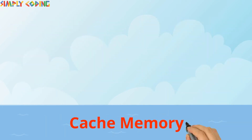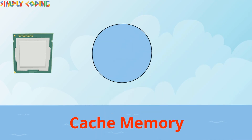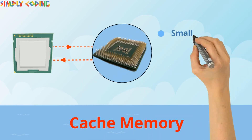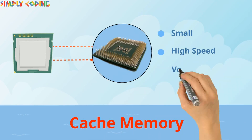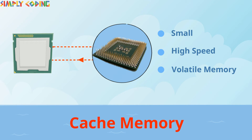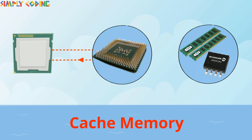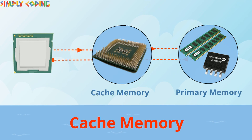Some computers also have something called cache memory, which is small, high-speed, volatile memory available to the processor for fast processing. The processor uses cache memory when a set of data or instructions are to be accessed again and again.